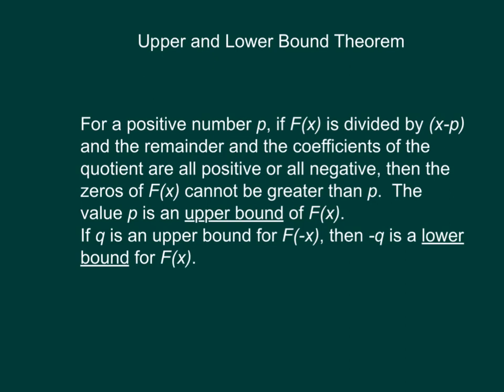The upper and lower bound theorem states: for a positive number p, if f(x) is divided by x minus p and the remainder and the coefficients of the quotient are all positive or all negative, then the zeros of f(x) cannot be greater than p. The value of p is then called an upper bound of f(x).